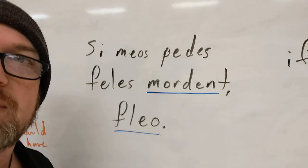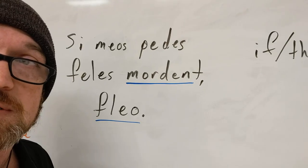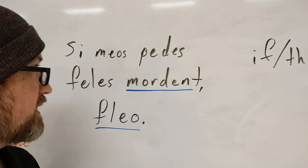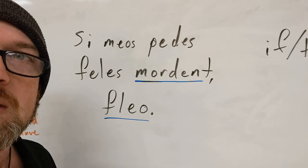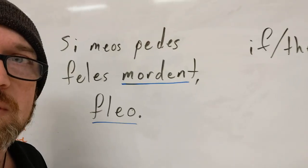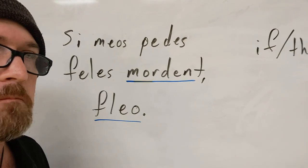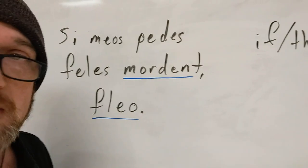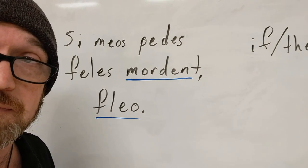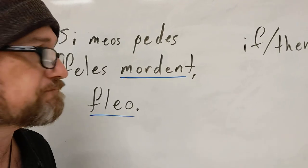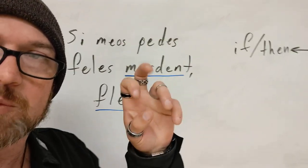Check this out — that is a condition, right? It starts with an if, and do keep in mind it also might show up with a nisi, not just a si — it could be if or if not. When you look at what that says, it says: if the cats are biting my feet, then I'm weeping. There's no special grammar here that you wouldn't already know about. I just used good old Latin 1-style present tense verbs.